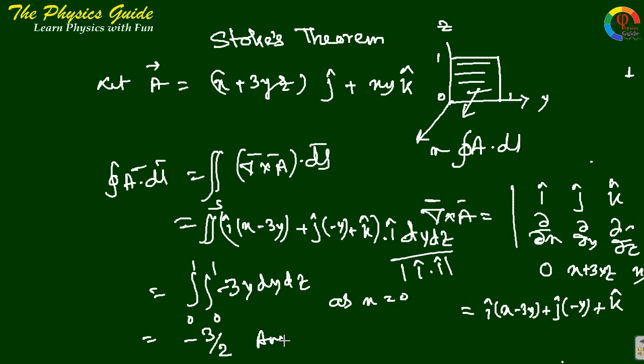So this gives minus 3 by 2. So this is the answer. We have done it easily in 3 or 4 lines, but if we take the direct method A dot dl then this would be lengthy.